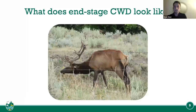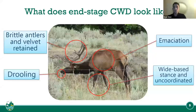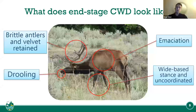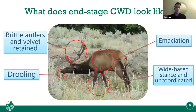In the end stage it looks like this: they'll have brittle antlers, velvet will be retained, they'll be drooling, wide-based stance, uncoordinated, and emaciated. Basically when they're in that final stage they're like a zombie. The wasting-away part is the big one — they'll just be skin and bones. It's very uncommon to find an animal in this stage; most times they'll be predated before they look like this. Malia DeVivo, the research scientist, took this picture in Wyoming.